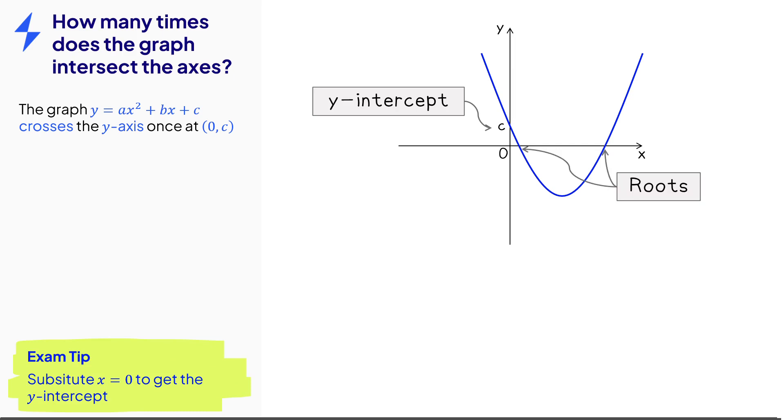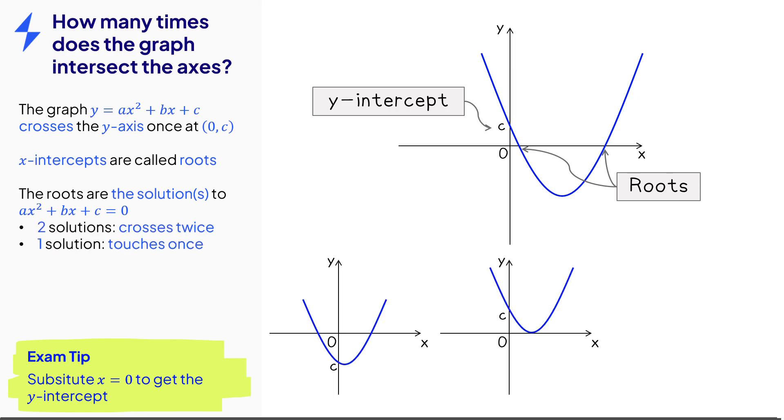The x-intercepts are called roots. The roots can be found by solving the equation when y equals 0. There could be two solutions, so two roots. One solution, so the graph touches the x-axis once, or zero solutions, so it doesn't touch the x-axis at all.